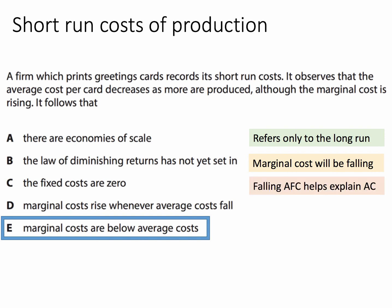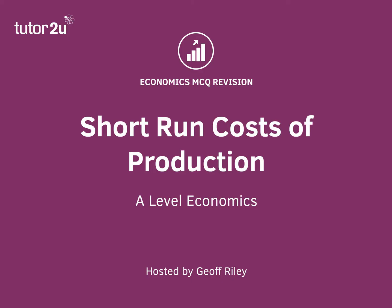Option C says fixed costs are zero — that's unlikely to be right, because one of the reasons average cost keeps declining even though marginal costs are increasing is that we're spreading the average fixed cost of production. A firm might have overhead costs; the more units produced, the lower the fixed cost per unit, helping explain why average cost per card is still decreasing. Option D says marginal cost rises whenever average costs fall — but as we've seen on the diagram, both marginal cost and average cost can rise together, which occurs at any output beyond the point where marginal cost has intersected with the average cost curve.